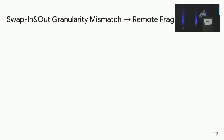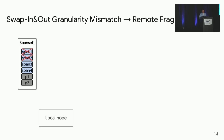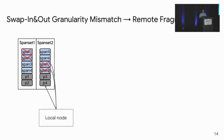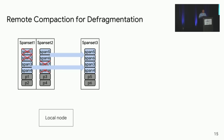However, since we swap in and swap out at different granularities, this causes remote fragmentation. For example, the local node swaps out span set 1 to far memory, then swaps spans 1 and 2 back into local memory. Because each span lives in only one place — either local or far memory — this leaves two invalid span-sized holes in span set 1 on far memory, and similarly creates holes in span set 2. These holes persist and cause far memory fragmentation, since future swap-outs always write new span sets.